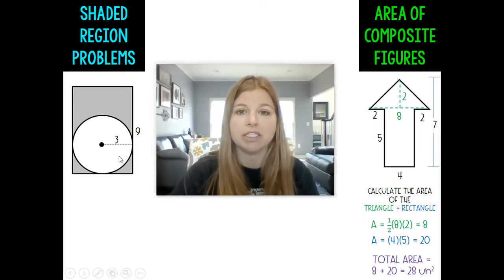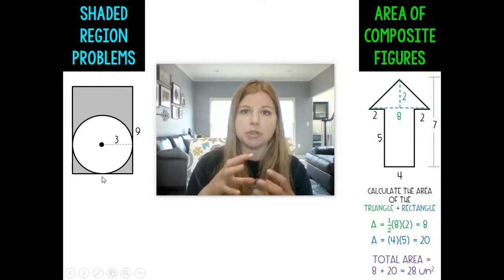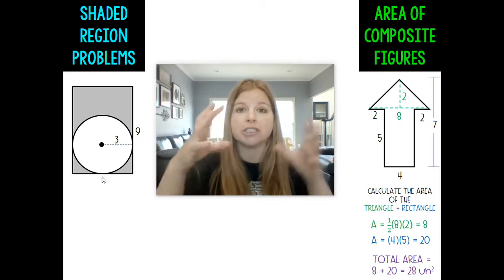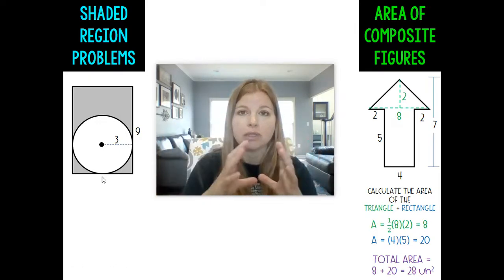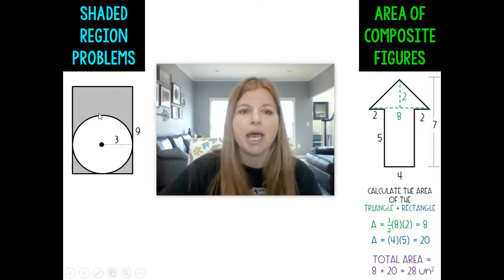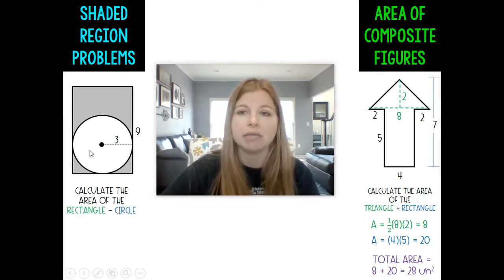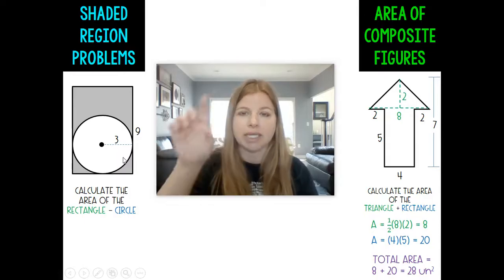Let's take a look over here at the shaded region problem. Now this problem is where I don't have two figures adding up to make one image I actually have a rectangle with a circle kind of punching a hole through it and if I want to know just the area of the rectangle what I have to make sure I do is I have to calculate the area of the rectangle and then subtract the area of my circle. Kind of like I'm cutting that circle out.